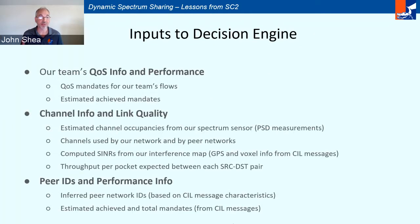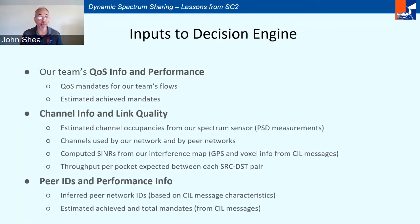The state space was also huge. The inputs to our decision engine included our team's quality of service information, all the different flows we had to support and how we were doing in supporting them, how many points they were worth, channel information, link quality from our spectrum sensor, information from other teams which we used to build an interference map, our achieved throughput per pocket, peer information including who they were and how they were doing for each of their flows. This produces a huge amount of information.